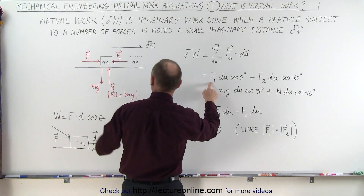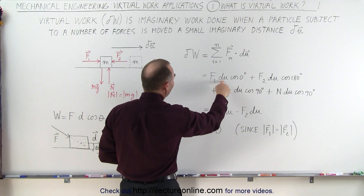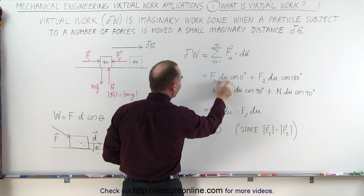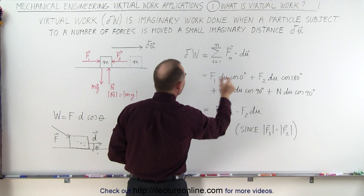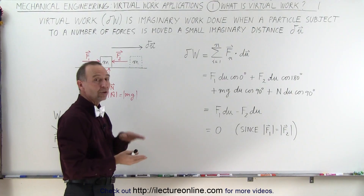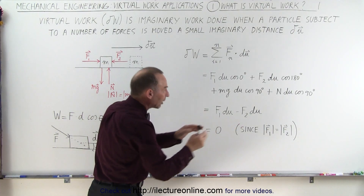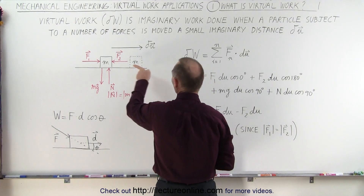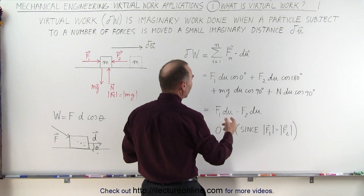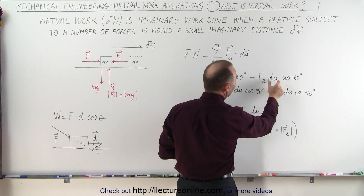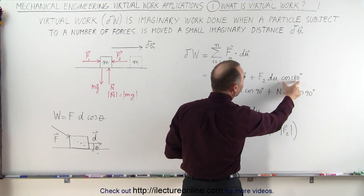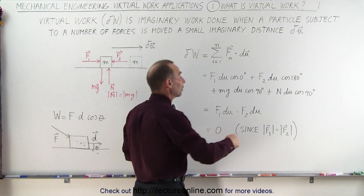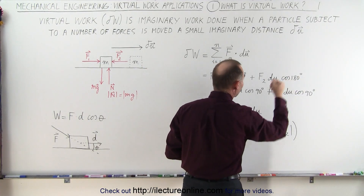The first force is pushing to the right, times the displacement du — so we have the magnitude of the force times the magnitude of the displacement times the cosine of the angle between them. Since both the displacement and F1 are pointing in the same direction, the angle between them is zero. Then we have the second force in the opposite direction — again the magnitude of the force times the magnitude of the displacement times the cosine of the angle between them. In this case the angle is 180 degrees, so the cosine of 180 will be minus one.